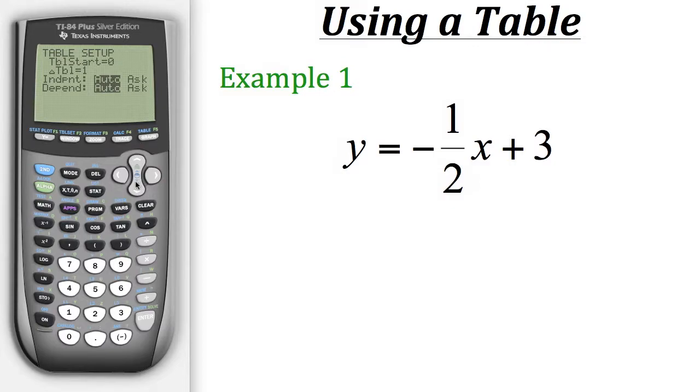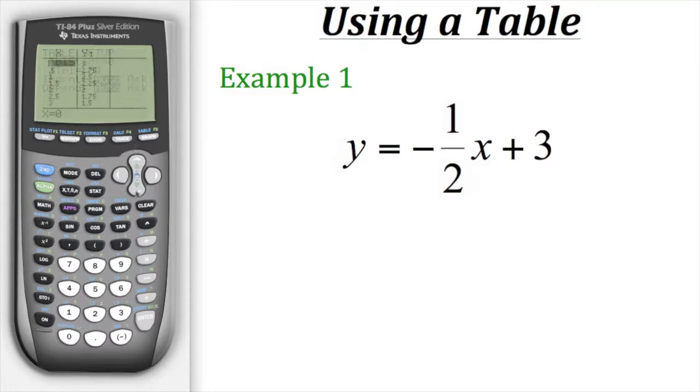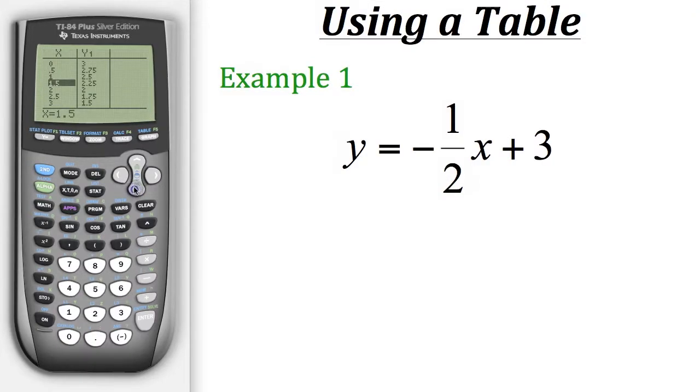It went 0, 1, 2, 3, and so forth. Well, if we wanted to go up by halves, we could change that increment to be 0.5 to represent a half. So now when we go to our table, it's going up by one-half every time. And we could see those values.